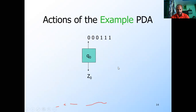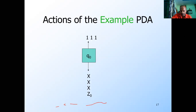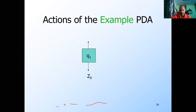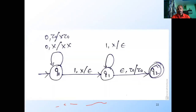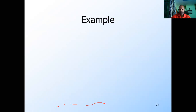Let us trace through an example input. For three zeros followed by three ones: first push X for each 0 — three times — remaining in q₀. On the first 1, pop X and move to q₁. On the next 1, pop X and remain in q₁. On the last 1, pop X and move to q₂ — the accepting state. So that string is accepted. This is the transition diagram of the pushdown automata. We will discuss the next example in the next class. Thank you very much.